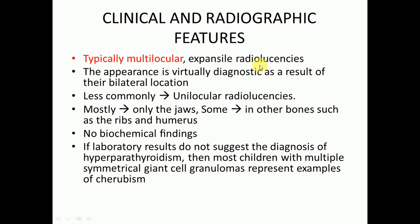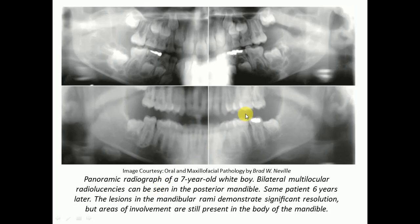Radiographically, there are typically multilocular expansile radiolucencies present. The appearance is virtually diagnostic due to their bilateral location. Less commonly, unilateral radiolucencies are present. Mostly the jaws are involved, but in some cases other bones such as ribs and humerus may also be involved. There are no biochemical findings in cherubism. If laboratory results do not suggest hyperparathyroidism, most children with multiple symmetrical giant cell granulomas represent cherubism.